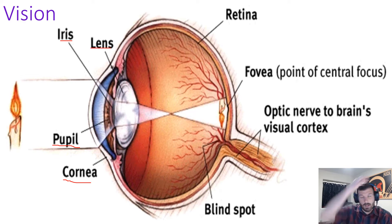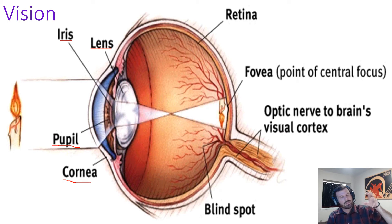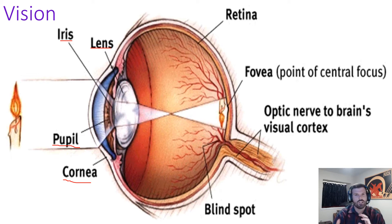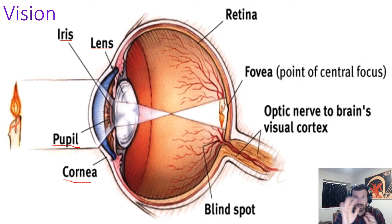Next we have the lens, which sits behind the pupil and the iris. Basically what happens is when light comes in through the pupil, it is going to refract off the lens and hit the retina in the back. The lens changes shape to allow us to better see and focus in on certain things, depending on what we're paying attention to. So if you're looking at something that's close in, the lens will change shape so that the thing you're looking at comes into focus.